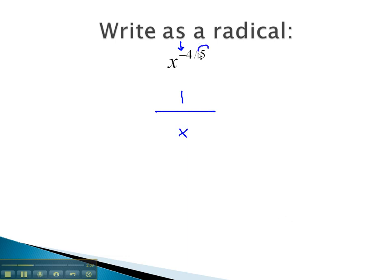The denominator is going to be the index on my radical, 5, and the numerator, 4, is going to be the exponent on that expression. This becomes 1 over the 5th root of x to the 4th.